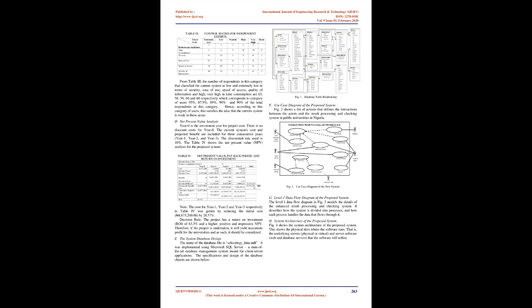Table I shows the control matrix of the data collected from Information Professionals. The number of respondents in this category that classified the current system as low/extremely low in terms of security, ease of use, speed of access, quality of information, and high/very high in time consumption are 36, 37, 35, 36 and 37 respectively, corresponding to 80%, 82.2%, 77.7%, 80%, and 82.2% of the total respondents in this category. Hence, this satisfies the idea that the current system is weak in these areas.